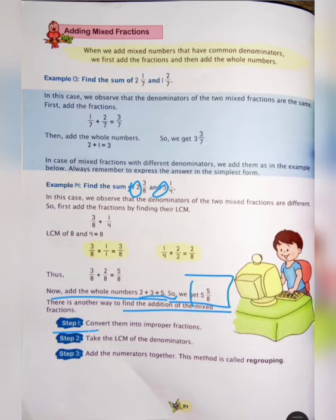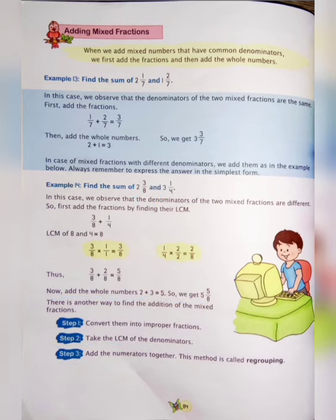Step 1: convert them into improper fractions. Then step 2: take the LCM of the denominators. Step 3: add the numerators together. This method is called regrouping. Let's see the next page.